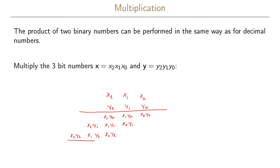Now we sum these partial products and label the result bits z0, z1, z2, z3, z4, and if we get something at the final position, z5. All terms in the product computation are AND products, and we feed the results of these AND products into an adder — so here we can use the full adder as defined before.